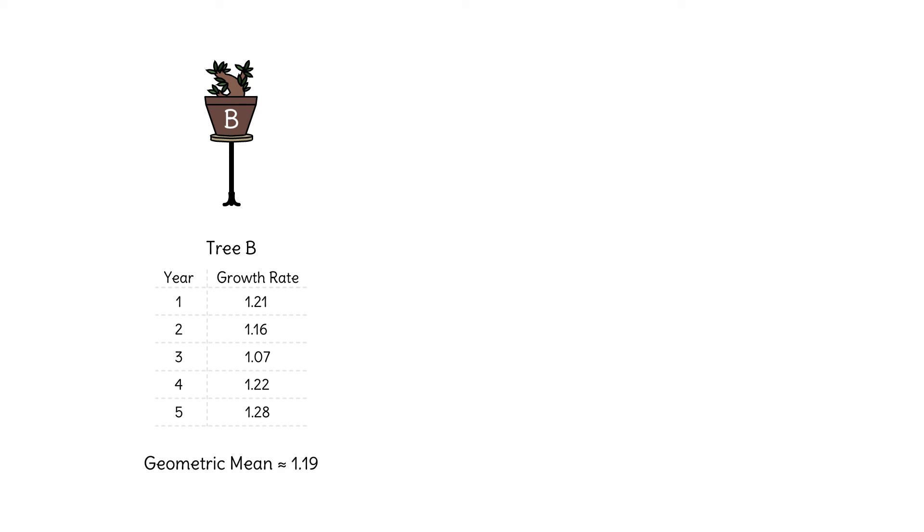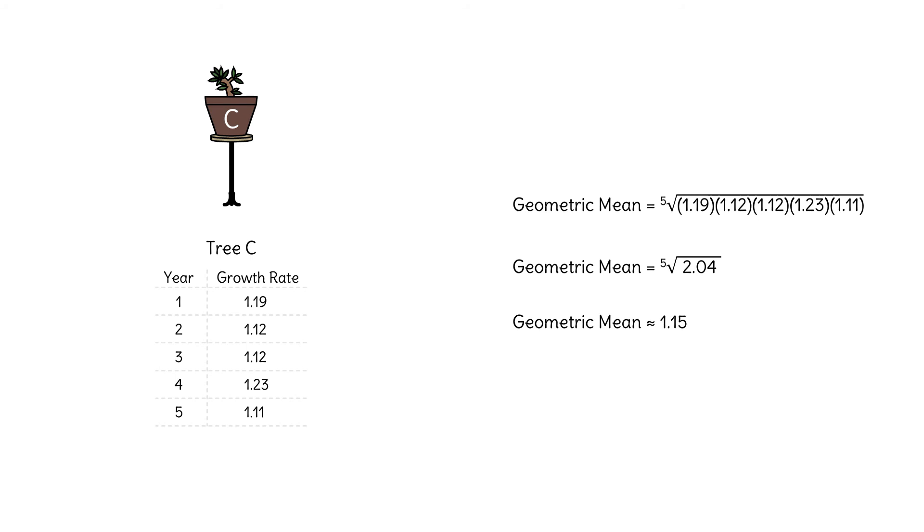Let's look at the last tree. The product of the five rates is 2.04, and the fifth root of that is 1.15. That's perfect! She'll clone this tree and hopefully get similar results.